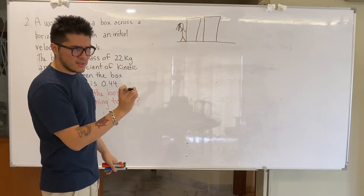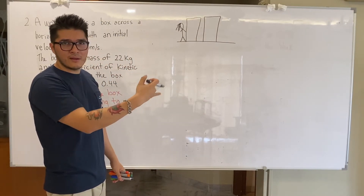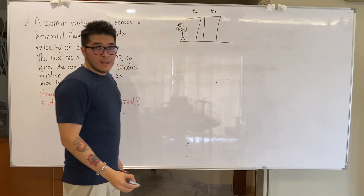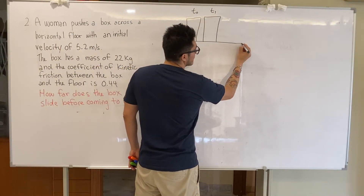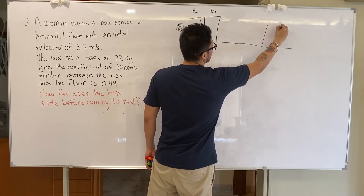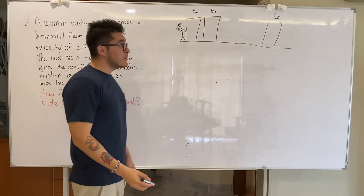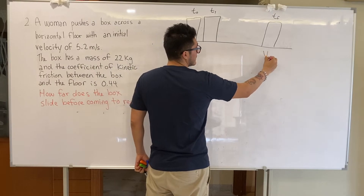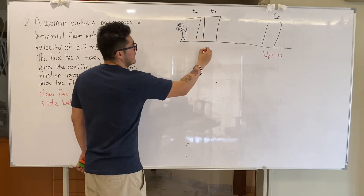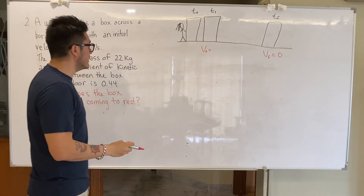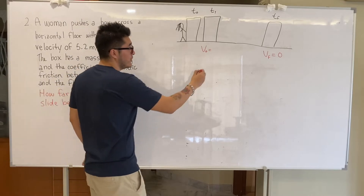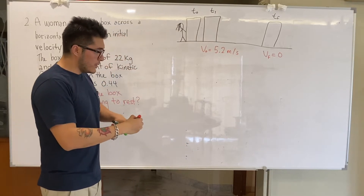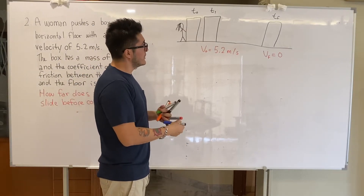It's not two boxes — it's just the same box at two moments in time: time initial and a moment later. Once it keeps sliding horizontally, we know that at the very end of this time interval the object has come to a complete stop. So the final velocity is zero and the initial velocity, just after she pushes it, is 5.2 meters per second.